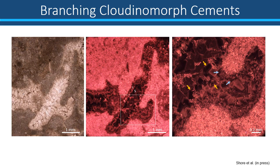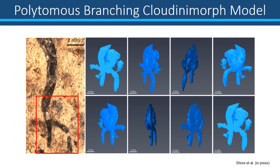The continuation of this cement can clearly be seen under cathode luminescence, as this highlights the different cement generations. Using the example of the non-luminescent cement highlighted by the blue arrow, we can see that the cement generation is continuous between the two tubes, suggesting a shared cavity with no evidence of a separating wall. The images taken during serial sectioning were stacked and a 3D model was produced. This model shows multiple branching from one parent Cloudinomorph tube, suggesting polytomous branching.